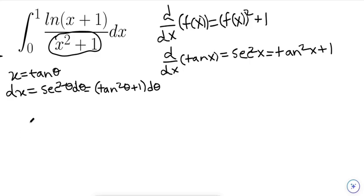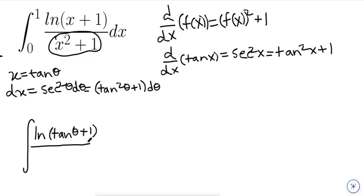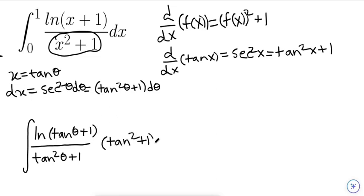Making this an actual integral: the integral becomes the natural log of (tan(θ) + 1) divided by (tan²(θ) + 1), and we replace dx with (tan²(θ) + 1) dθ. Obviously these two cancel out, so the integral we're left with is a lot simpler.